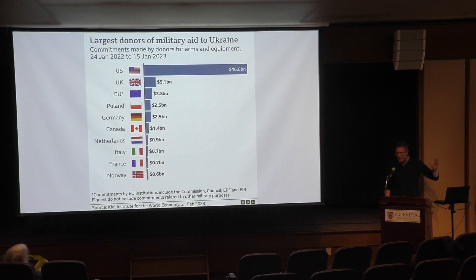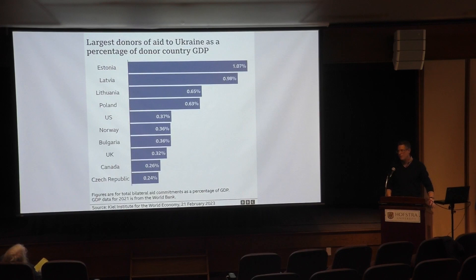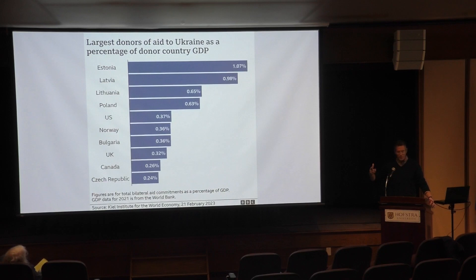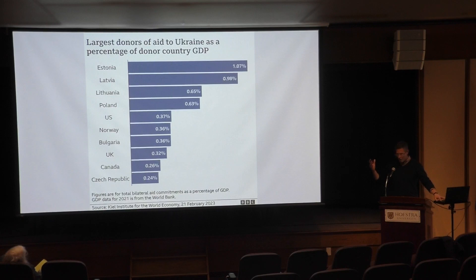The UK has done very similar things, and all these countries have coordinated efforts mostly through NATO and the EU. If we look at military contributions as a percentage of GDP, it's striking that Estonia, Latvia, Lithuania, and Poland — countries bordering Ukraine and Russia — have actually contributed more relative to their capabilities. Estonia providing over 1% of their GDP in military aid reflects how scared these countries are of Ukraine losing. This war is expanded in many ways beyond just Ukraine and Russia.